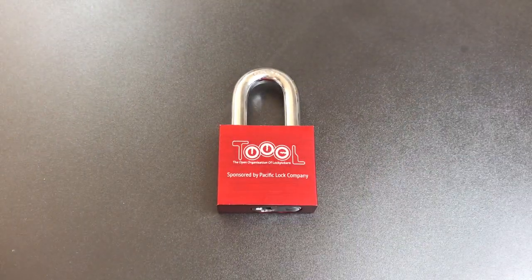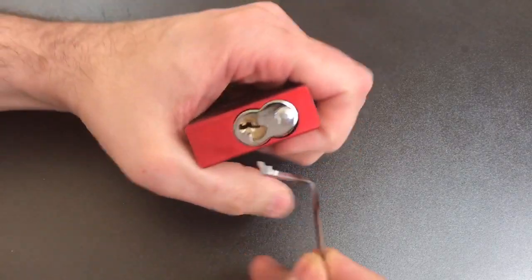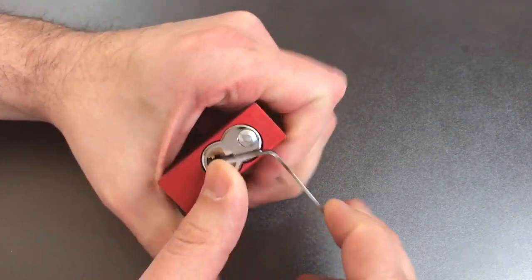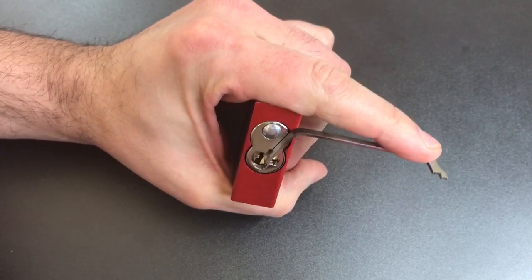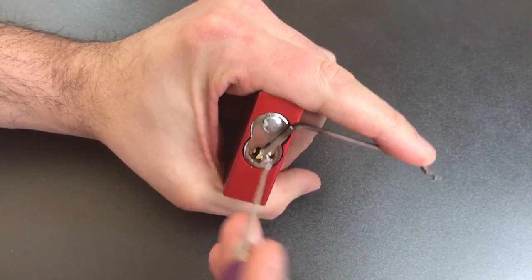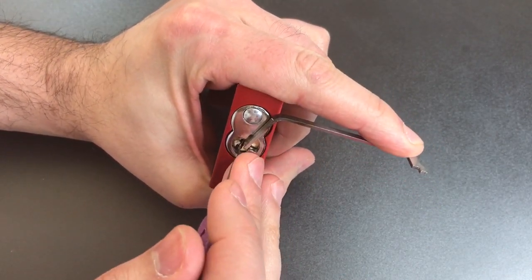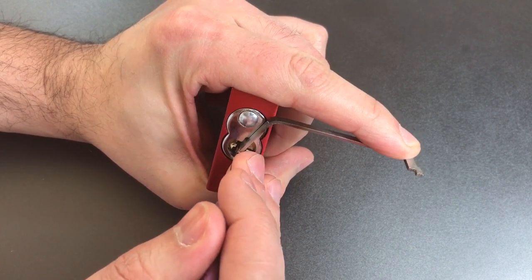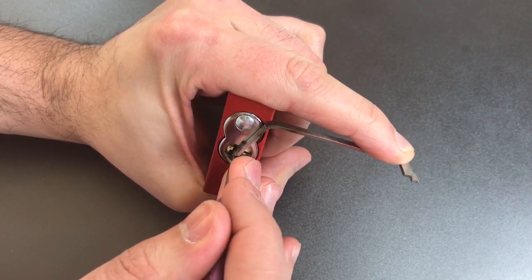Let's get some tension in here. I'm going to use top of the keyway tension with a 50 thousandths pry bar and a standard hook in 18 thousandths. Okay, one is loose, so is two. Little click out of three.